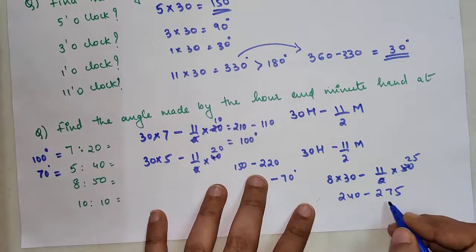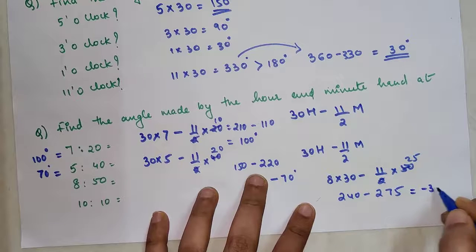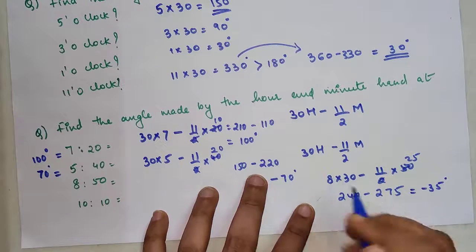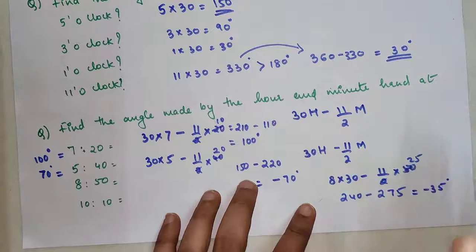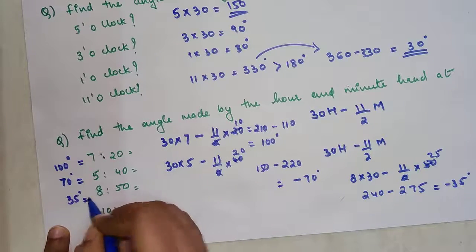So here again there is a negative answer which is coming. So here your answer is coming out to be minus 35. So you will just simply discard the negative value and your answer now changes to 35 degrees.